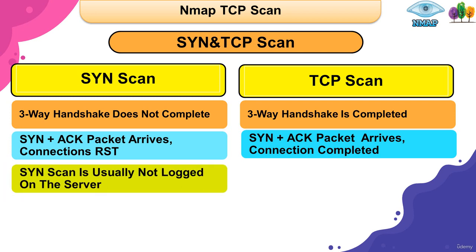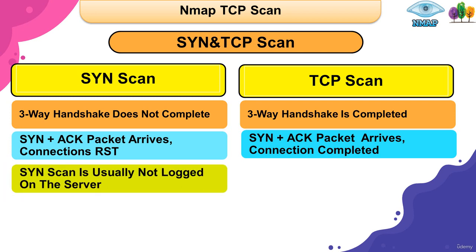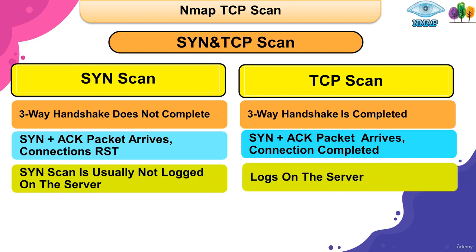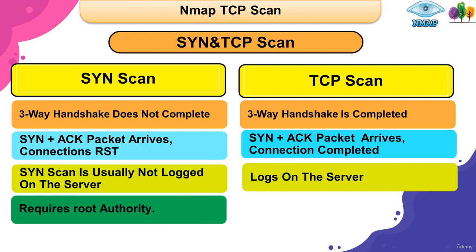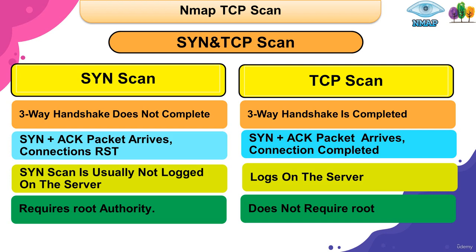SYN scans are usually not logged on the server, whereas TCP scans are logged on the server. SYN scans require root authority because there is interference with the packets, while a TCP scan does not require any root privileges because it uses the TCP connect method.